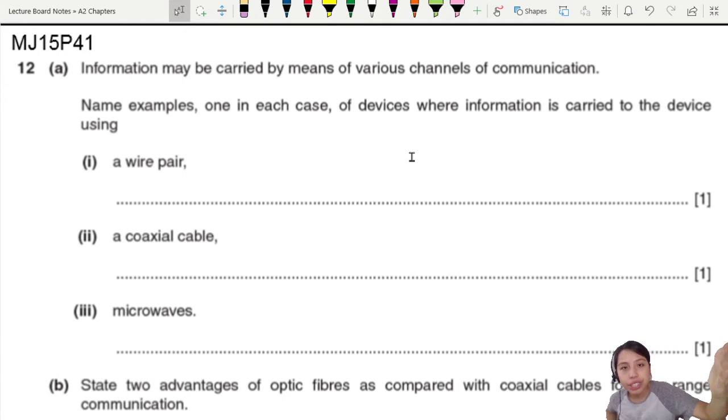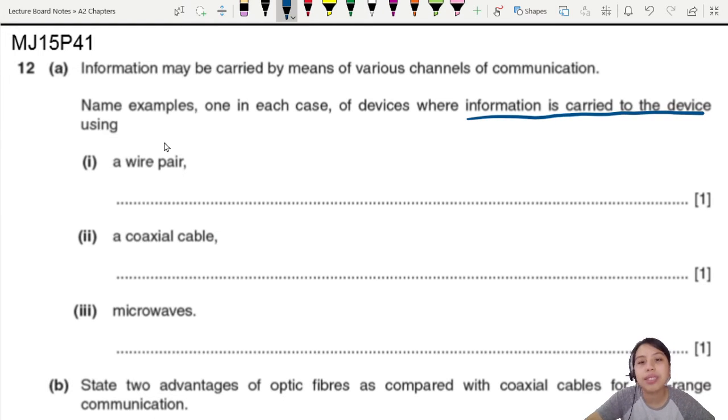Information, whether digital or analog, can be carried by means of various channels of communication - wire, satellite dish, whatever. Name examples of devices where information is carried to the device using a wire pair. Now this one, pay close attention - info to the device using this thing. So I'm talking about the device wire pair, where do we use wire pair?